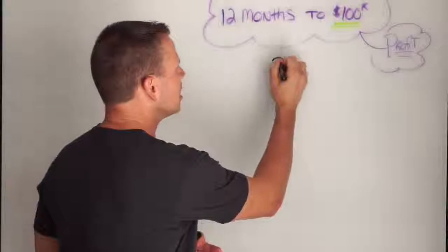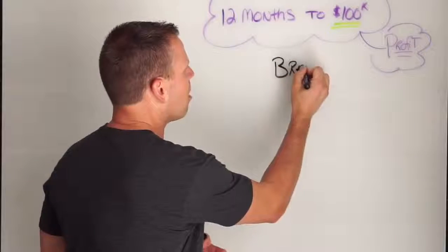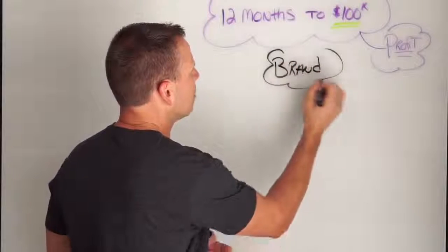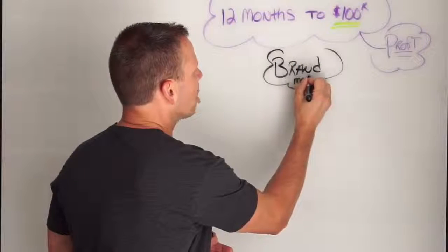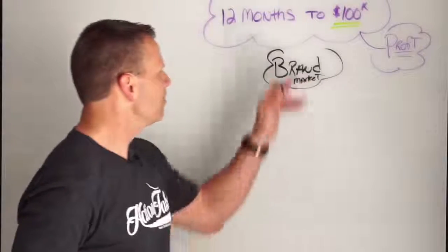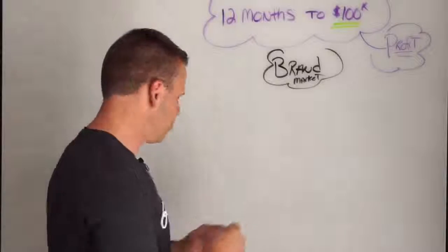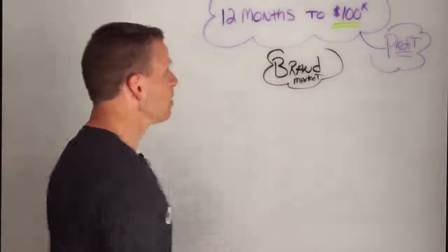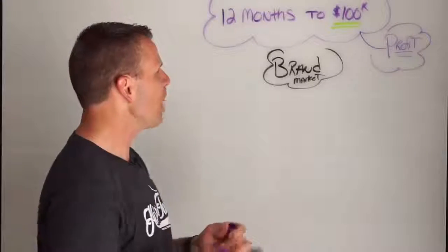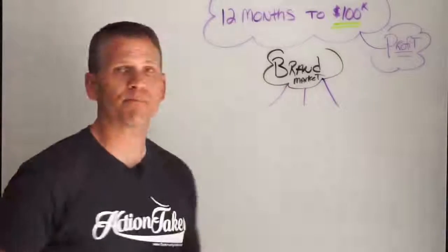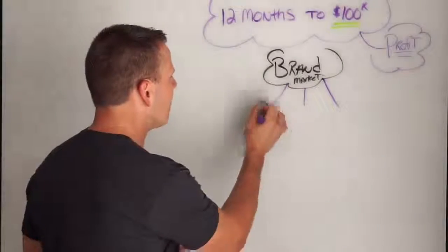Alright, so let me kind of outline it here. Number one, the very first thing that I want you to understand is we're talking about finding products that serve a brand. Let me show you what I mean here. So let's just say that we find our market and we build a brand. So I'm just gonna say this is our market, but we're gonna build a brand in that market. Now what I want to do is I want to then find three different products off of that brand.